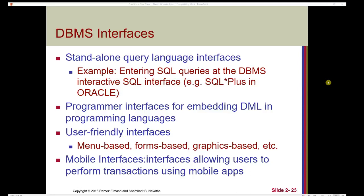What kinds of interfaces exist to communicate with the database? There are standalone query language interfaces — for example, using SQL queries at the DBMS interactive SQL interface. There are also programmer interfaces for embedding DML in programming languages. Some interfaces are quite user-friendly, like Microsoft Access or SQLite, and are often menu-based, forms-based, or graphics-based.